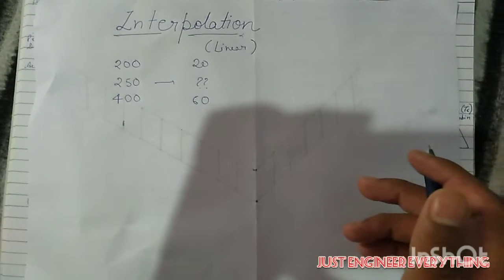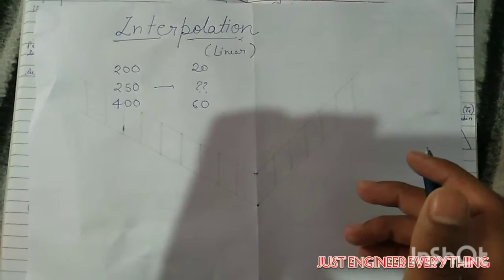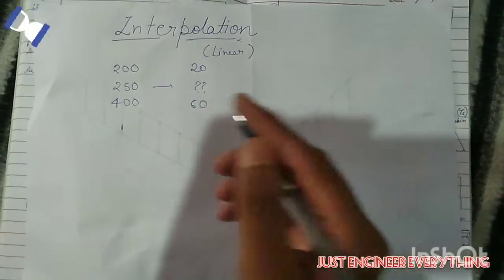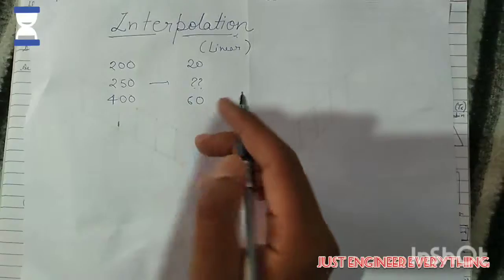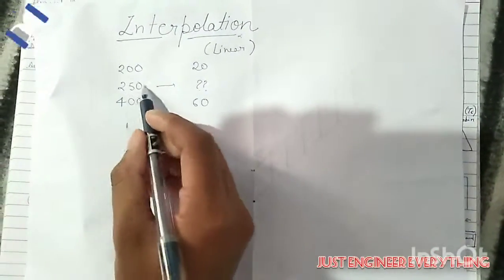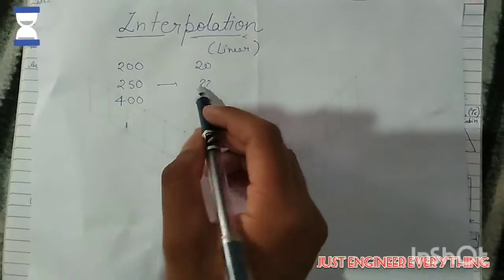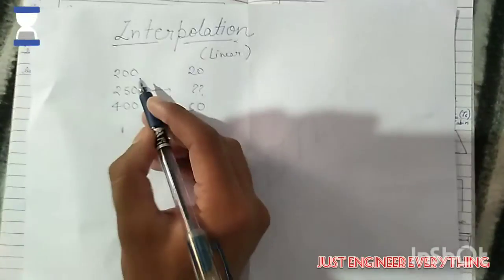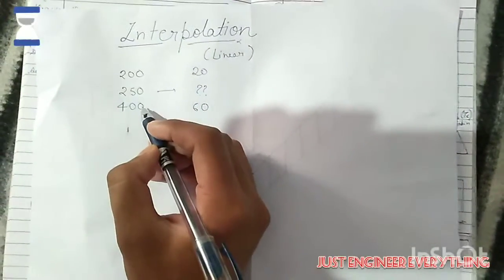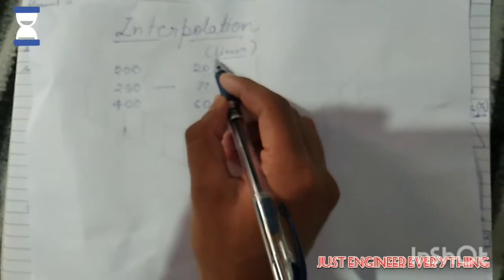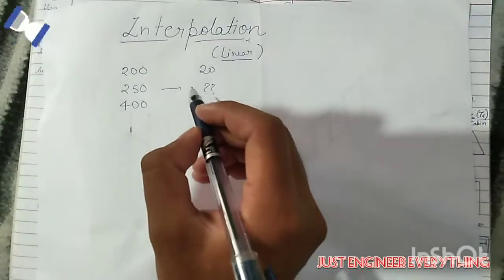So, interpolation. What we basically do in interpolation is follow the equation of a line, in which we have the coordinates of a point — one coordinate we are having here and another coordinate we have to find. Interpolation, more than the steam table case, is linear interpolation, which follows the equation of a line.